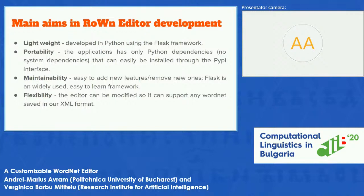Another thing we wanted was for the system to be portable. For this, we developed the application to have only Python dependencies that can be easily installed with the pip interface, so the application does not have any system dependencies. Another point was maintainability — we could easily add new features or remove old ones — and Flask is a widely used and easy to learn framework, so a software engineer can easily contribute to it.